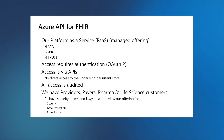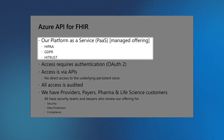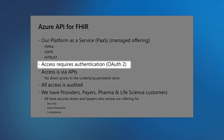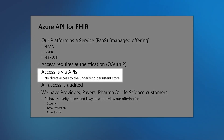So how do we tie this to the Azure API for FHIR? We've talked about the regulations and the requirements. Know that our platform as a service, our managed offering, is HIPAA, GDPR, and HITRUST compliant — we've been through the audits and the certifications. Access to our solution requires authentication; we use OAuth 2. Access is absolutely by APIs — there is no way to get direct access to the underlying persistence store. And this is for your protection and the protection of your users, your members, your patients.